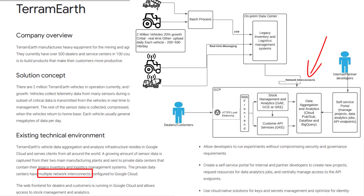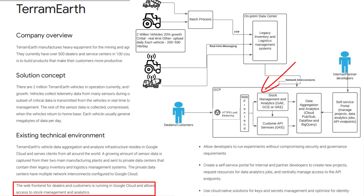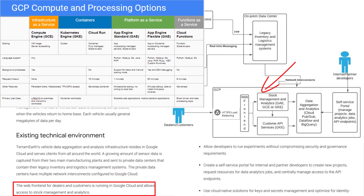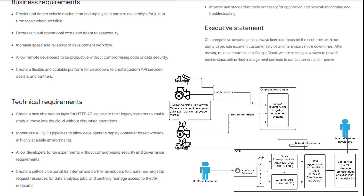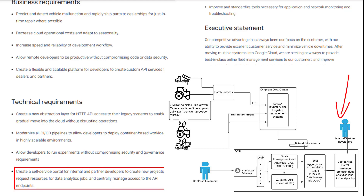Dealers and customers can access stock management and analytics systems, or any other future-developed API services. You can choose from GCE, GAE, and GKE for the applications and services. Review the cloud compute decision tree video for the differences among GCE, GAE, and GKE to prepare for answering questions in different scenarios. If you need to deploy container-based workloads, use GKE with HTTPS load balancers and Cloud Monitoring with custom metrics to scale up and down the environment. Internal and partner developers can create projects, request resources for data analytics jobs, and centrally manage access to API endpoints through the self-service portal.